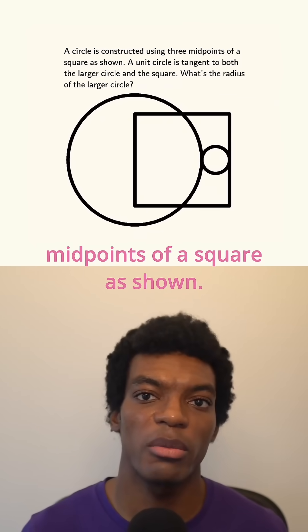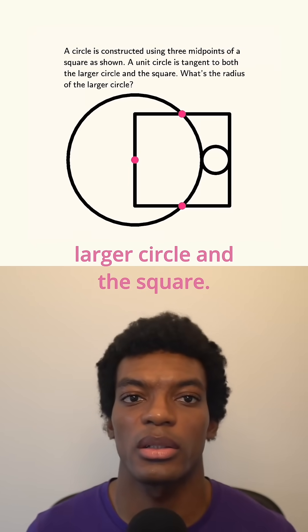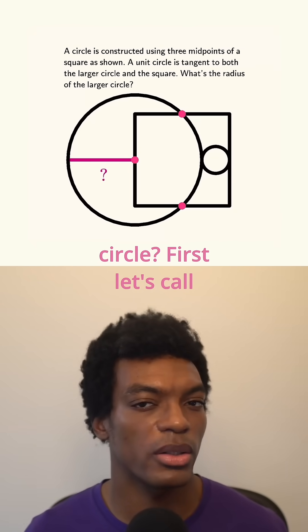A circle is constructed using three midpoints of a square, as shown. A unit circle is tangent to the larger circle and the square. What's the radius of the larger circle?